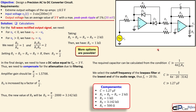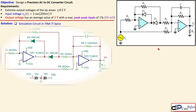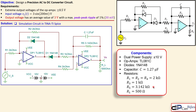Here are the simulation results. First, the circuit in SPICE — you can see all values, the op amps, the diodes, and I have used a dual power supply of ±10 V rather than ±8.5 V, because I know we lose some voltage in the circuit.